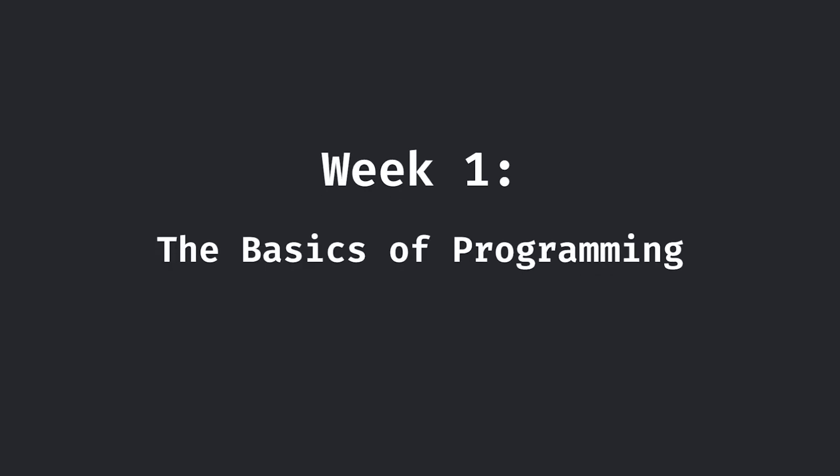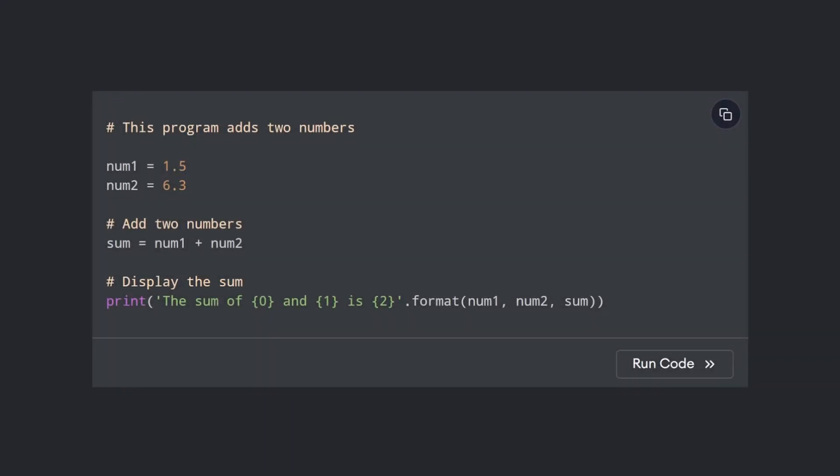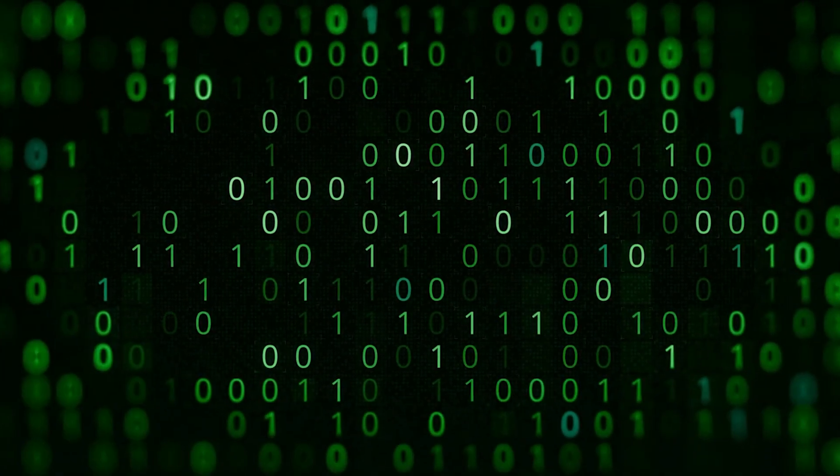The first week of the subject starts out with the basics of programming. The professor asks the students a simple question: what is programming? After the class debates it for a while and provides overly complicated answers, the professor breaks it down to say that programming is simply the art of telling a computer what to do. We can tell a computer what to do through tools called programming languages, which allow humans to provide instructions in a human readable format that then get translated into binary code for a computer to understand.